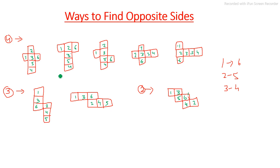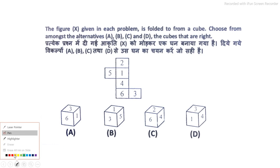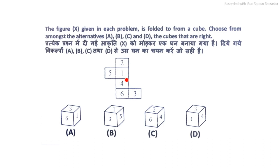Now let's get to the questions. In the first question, a figure is given and we have to find which cube can be made from it. We apply what we just learned to find the opposite faces. In this figure, we can see four boxes in a row.